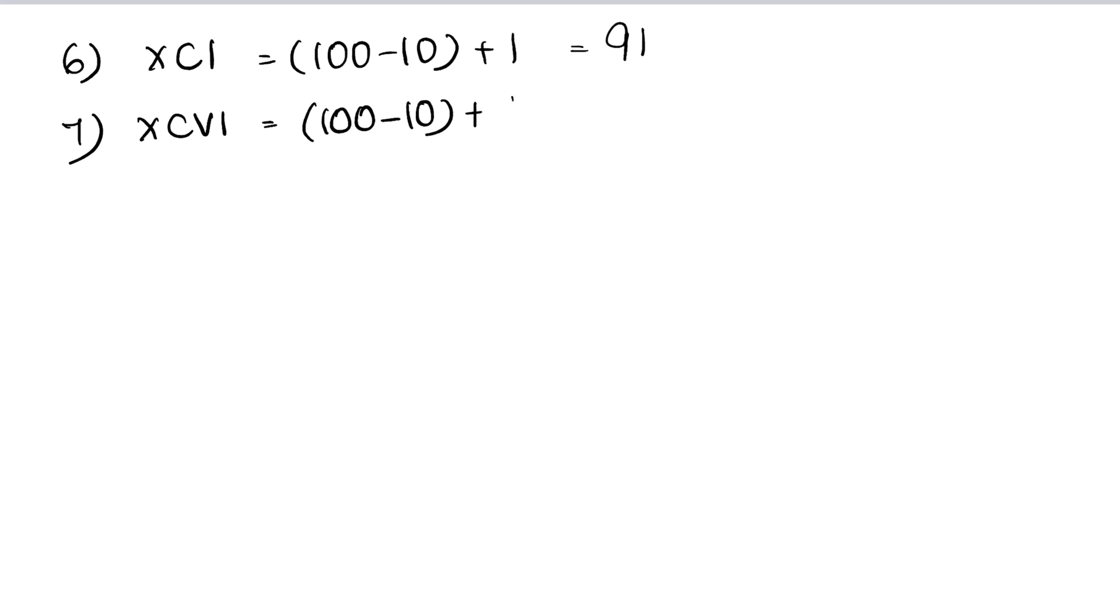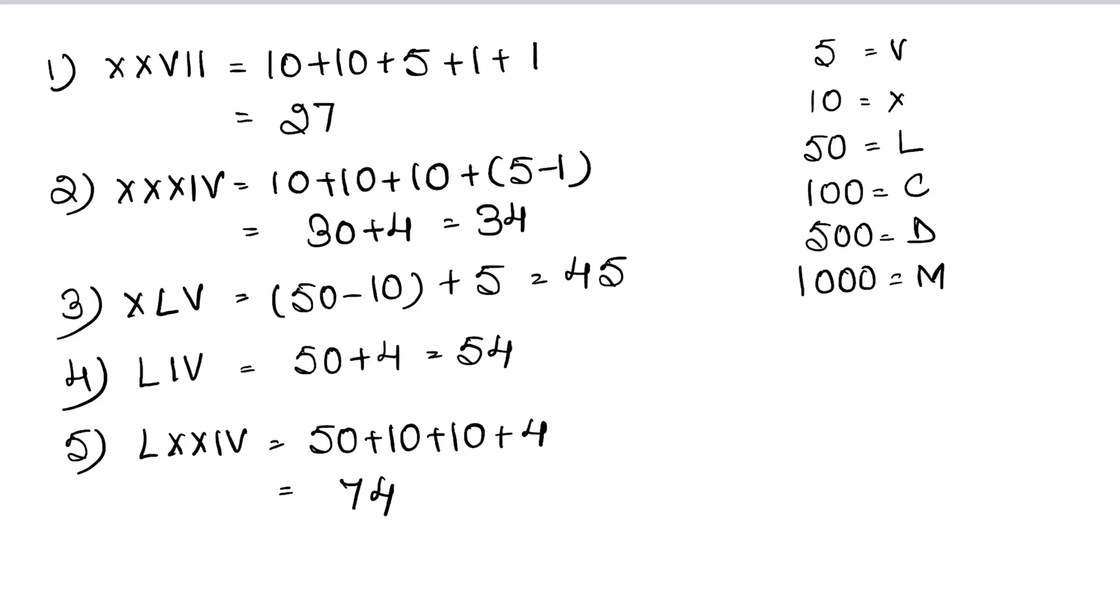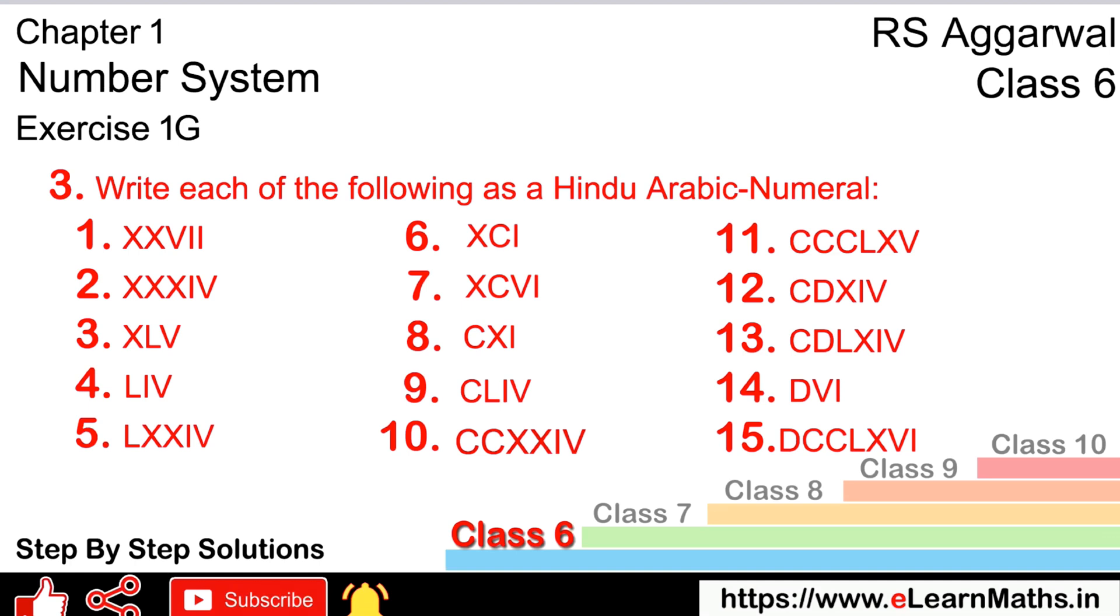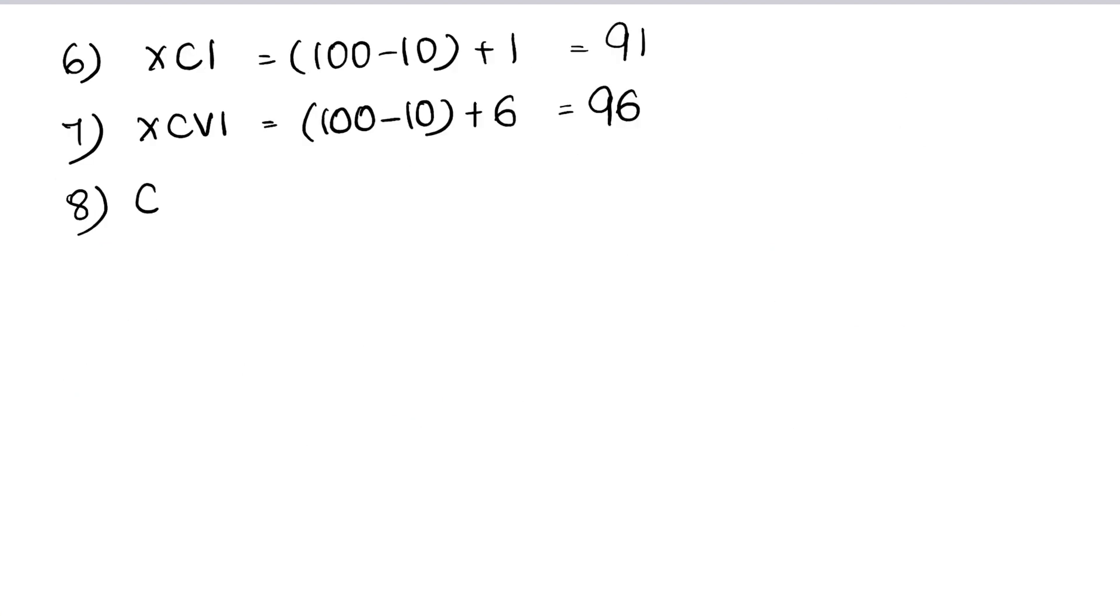Seventh is XCVI. XC is 100 minus 10 is 90, plus V is 5, plus I is 1, so 96. Eighth part is CXI. C is 100, X is 10, and I is 1, so 111 is the answer.